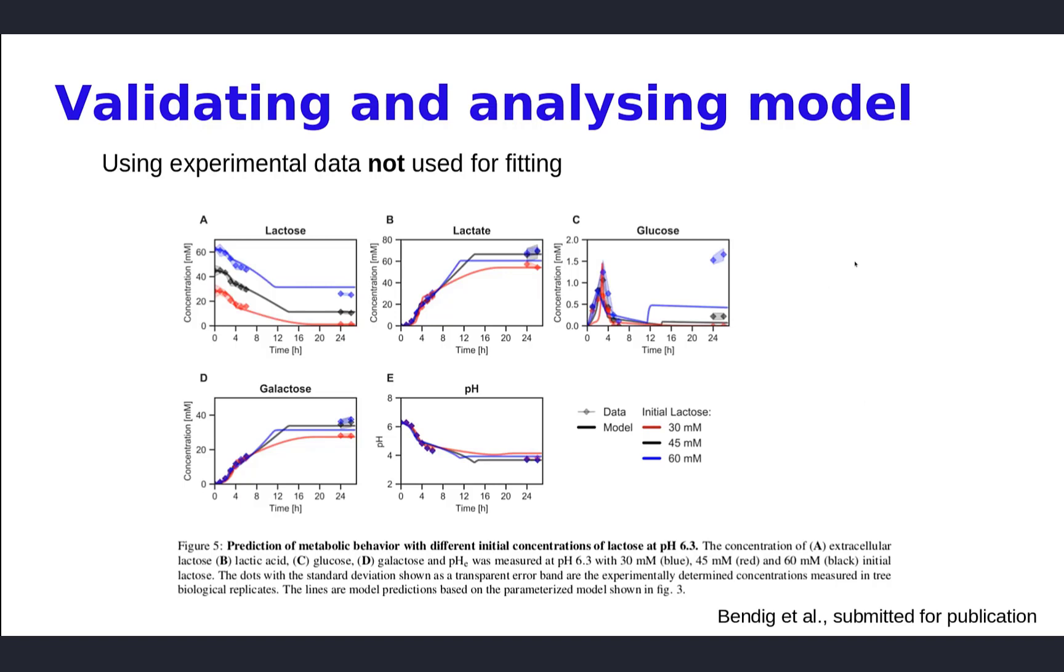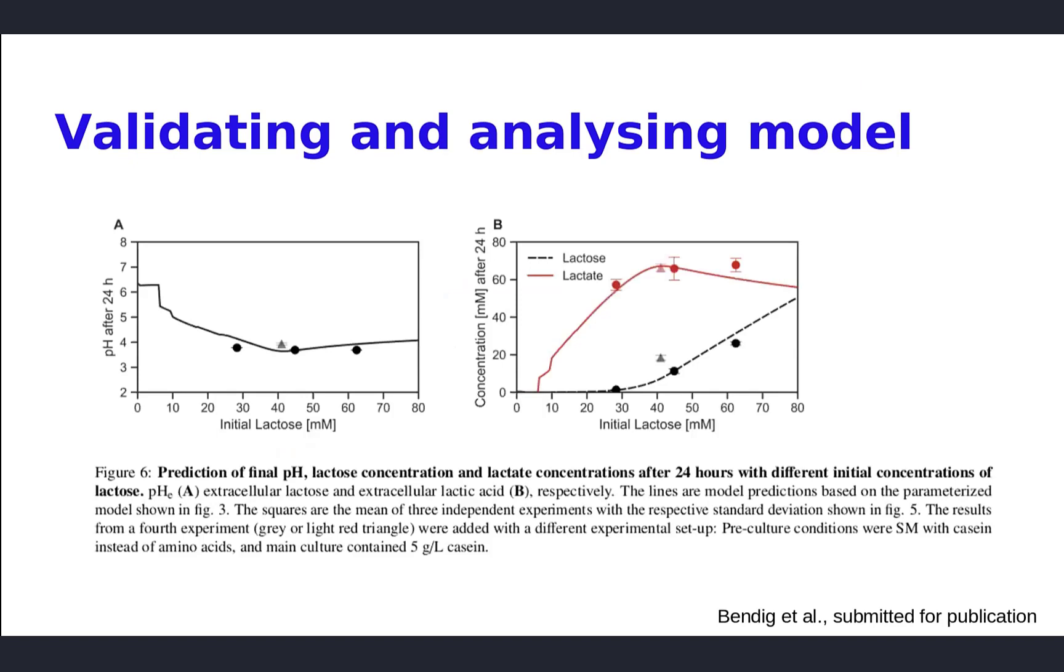We did some additional tests with endpoint concentrations of pH, lactose, and lactate. This gray point, for example, is with slightly different experimental conditions where the casein in the culture varied, which provides some amino acids. But even then, you can see that the prediction is not so bad. This is very important for biotechnological companies because the acidification is part of the texture, flavor, and preservation. It's important to predict the end pH, how much lactose is metabolized, and how much lactate is produced, as well as some flavor compounds.